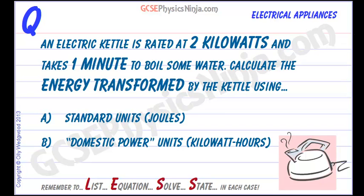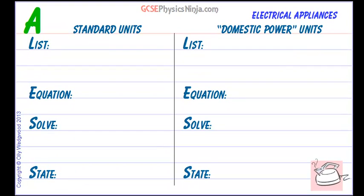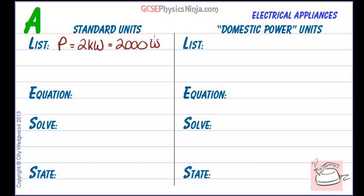What do we know to start with? The electric kettle is rated at 2 kilowatts, so P for power equals 2 kW — but we want standard units, so that is 2000 watts. What else do we know? The time the kettle is on is one minute, and one minute in standard units is 60 seconds.